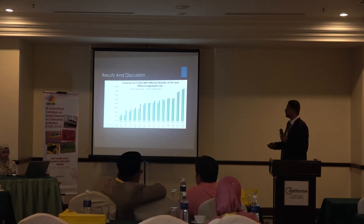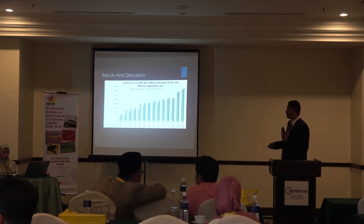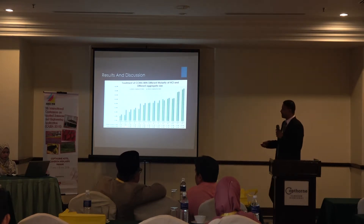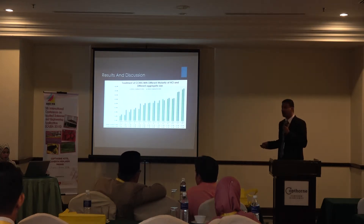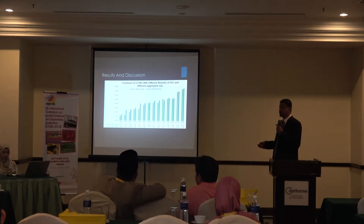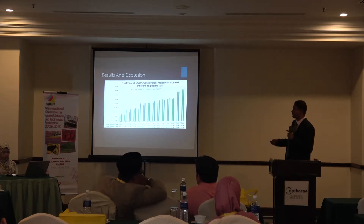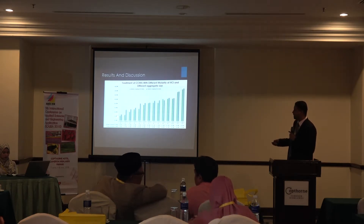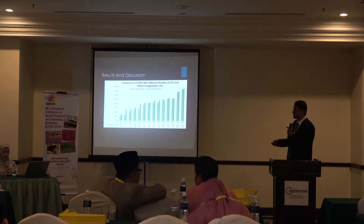This shows the treatment of crushed concrete with different molarities and different sizes. It shows that smaller particles of aggregate have a higher weight loss than the 20 mm size of aggregate. Here, this is the 10 mm size and this is the 20 mm — so the smaller the size of the aggregate, the better the results.